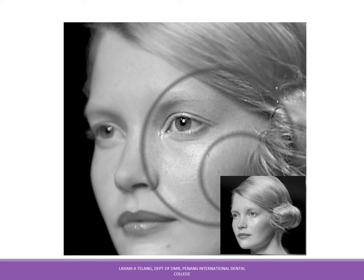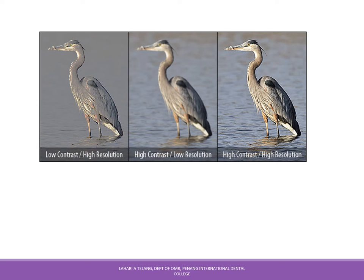In photography, one side of an image can appear sharper and clearer than the other, illustrating better sharpness and resolution. Similarly, comparing a low-contrast high-resolution image versus a high-contrast low-resolution image versus a high-contrast high-resolution image, it is clear that the best image of a subject is achieved with both high contrast and high resolution.